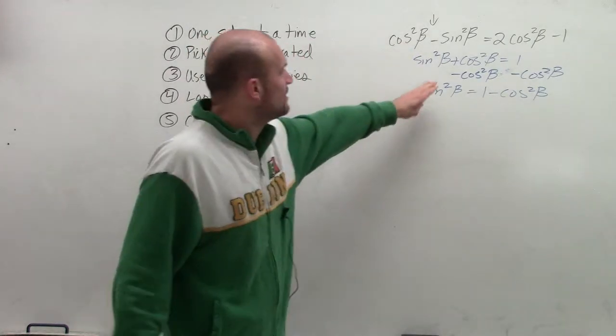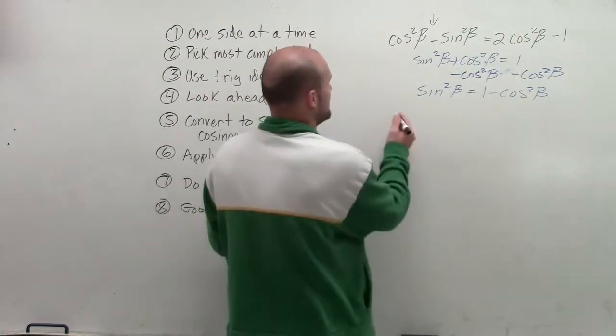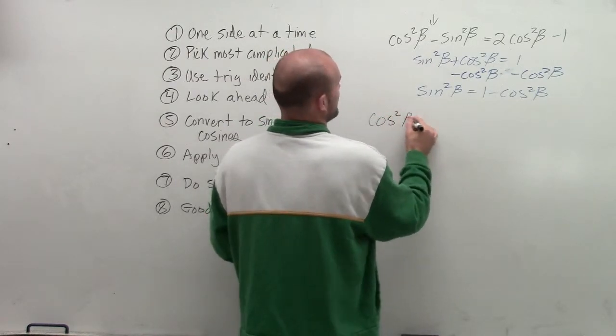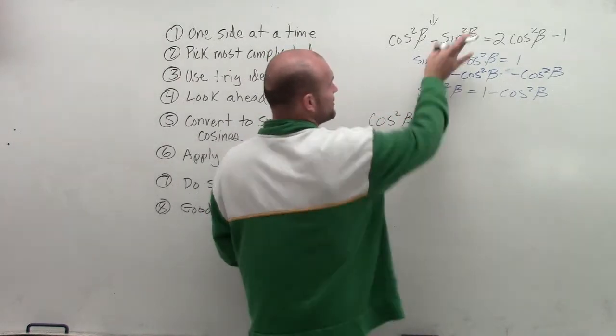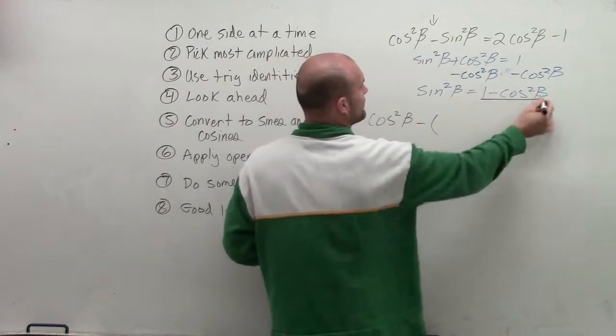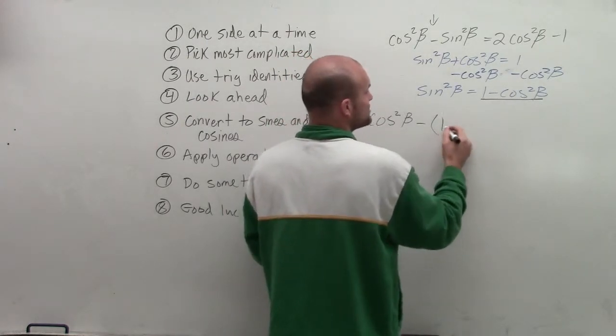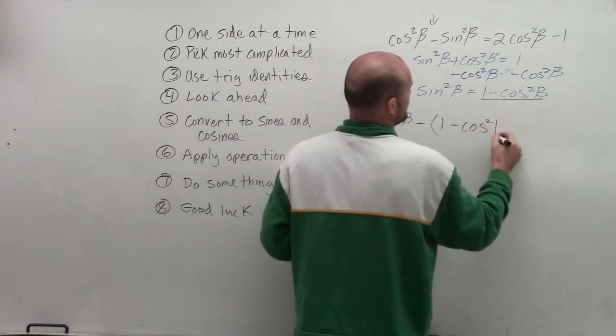OK. So now I know what sine is going to equal. I'm going to replace that with 1 minus cosine of beta. So I have cosine squared of beta minus, now rather than subtracting sine squared of beta, I'm going to rewrite what sine squared of beta is equal to by using my Pythagorean identity, which is 1 minus cosine squared of beta.